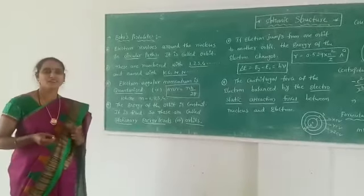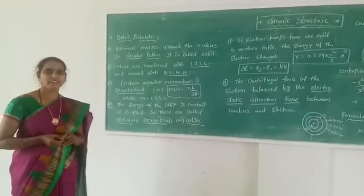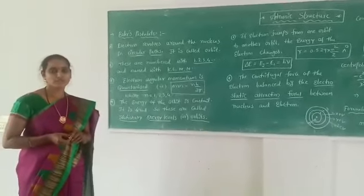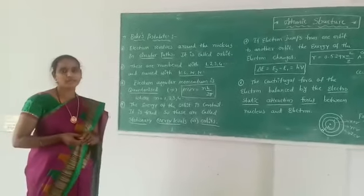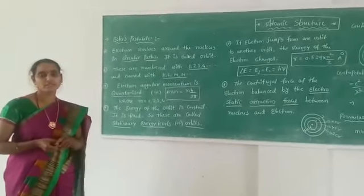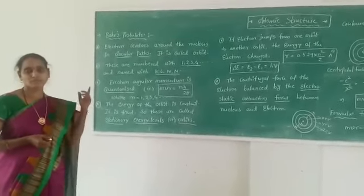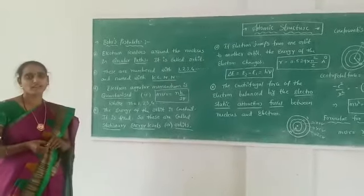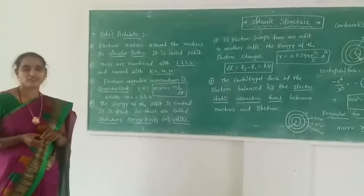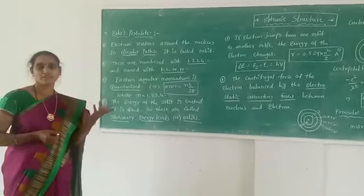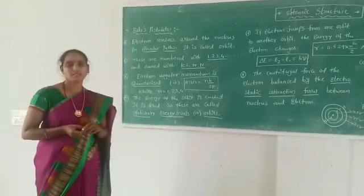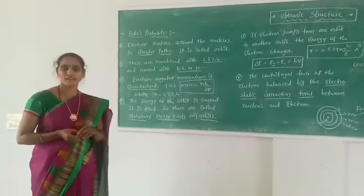Dr. Chairman sir and all the compared chemistry faculty, a very good morning to all of you. This is Bhavani, from the chemistry department. Today my topic is atomic structure. In the atomic structure, I would like to explain about Bohr's postulates, and one of the important applications of Bohr's postulates is the radius of the electron. We can find the formula for how to calculate the radius between the nucleus and a given particular electron.